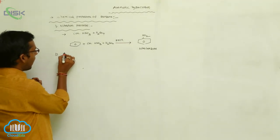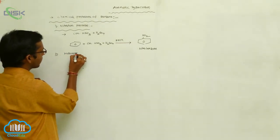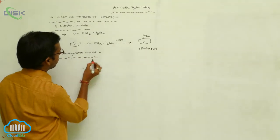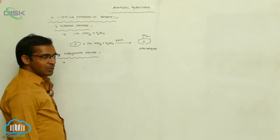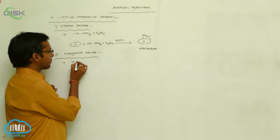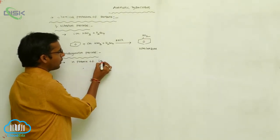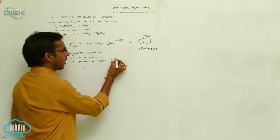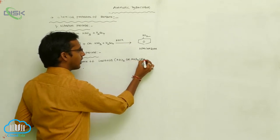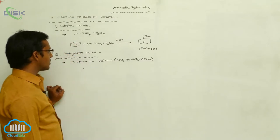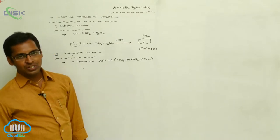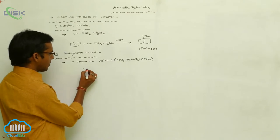The second process is halogenation. Halogenation means introducing a halogen group on benzene in the presence of a Lewis acid like AlCl3, FeCl3, or FeBr3. In the presence of these reagents, the halogen group is substituted on benzene. This is called the halogenation process.